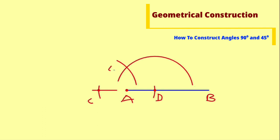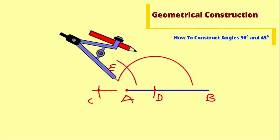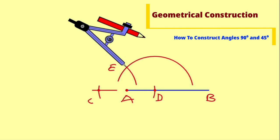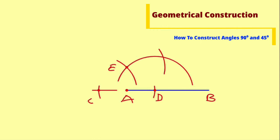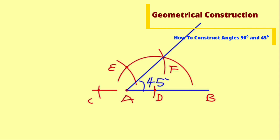Label it as point E. Bring back the compass using the same radius, take it to point E, and cut that semicircle. Name it as F — that is the point of intersection. Now you are done. Use your ruler to connect point F and point A together. What you have here is angle 45 degrees. This is exactly how to construct angle 90 degrees and angle 45 degrees. Thank you for watching — do have a nice day.